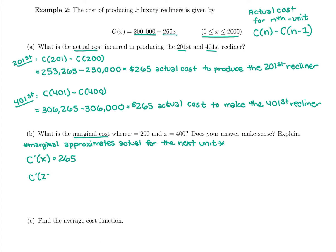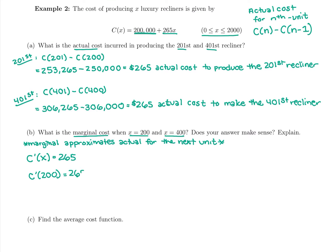If we plug in $200 like it asks, so it says plug in $200 and $400, C'(200) is just going to give us $265.